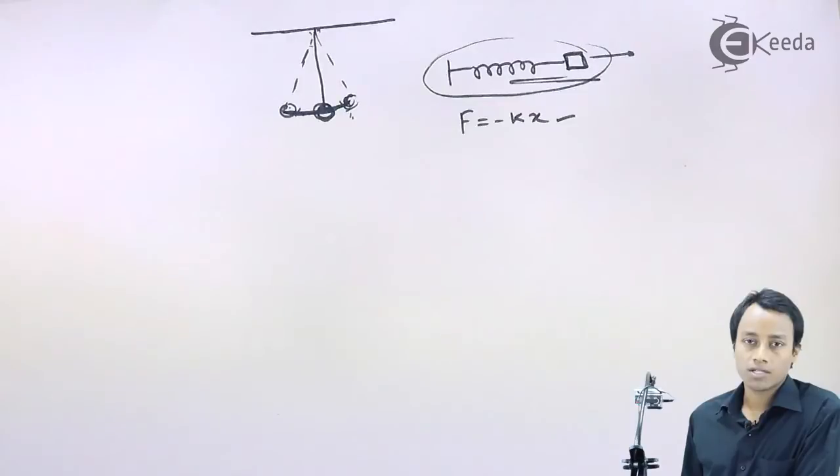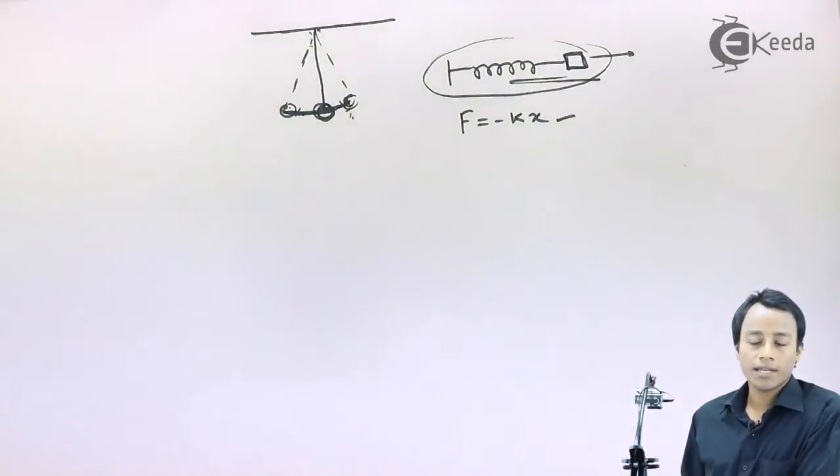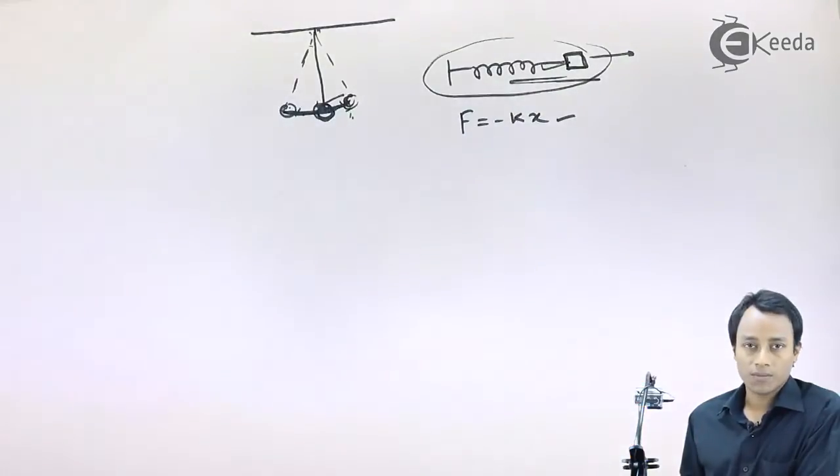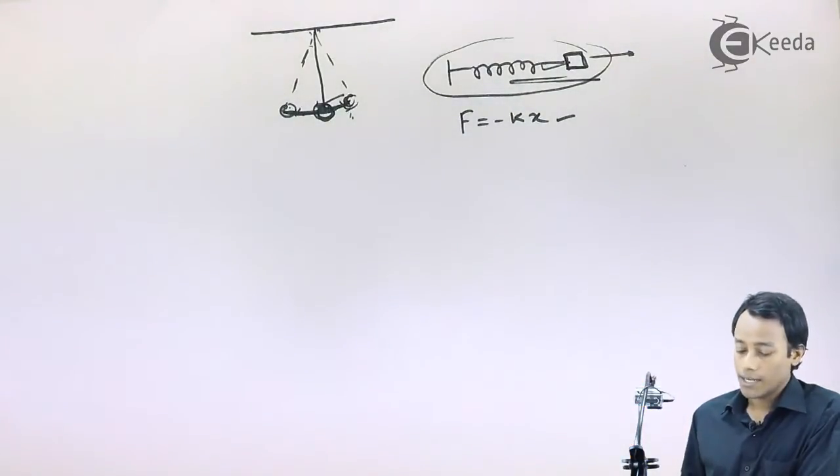But we have talked about natural oscillations. For example, a swing which you have seen in the park. So in that swing also, in the case of the swing, what happens after some time the swing, it comes to rest. Just a pendulum rest, a spring mass system rest after a certain time.